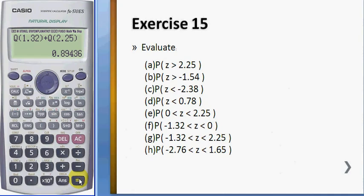And h, we have negative 2.76. And we have the... oops. Do it from the beginning. Now 2.76. Press. 1.65. This will give you 0.94764.